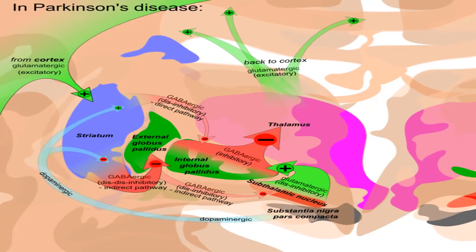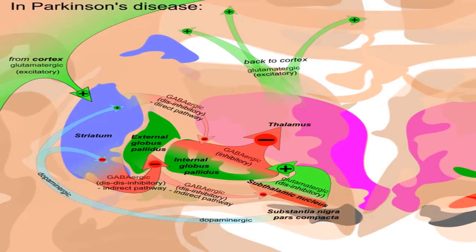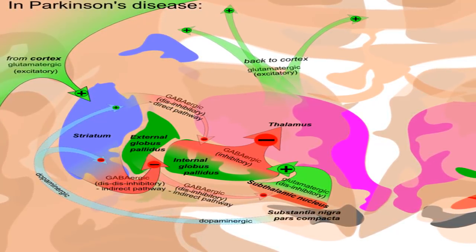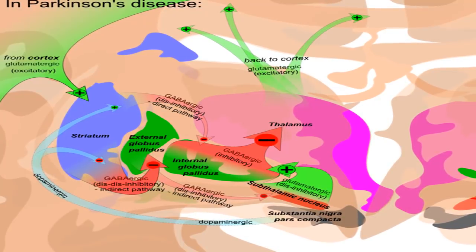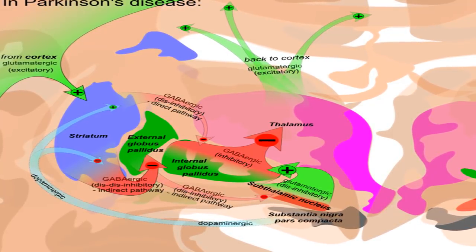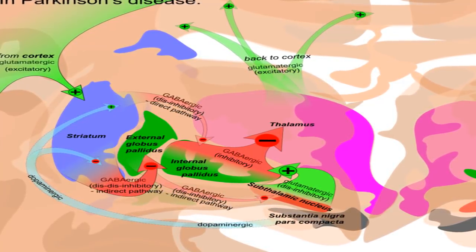These symptoms can also be mistaken for other conditions. But as PV progresses and your blood thickens even more, the slowing of your blood's flow may cause more serious problems.